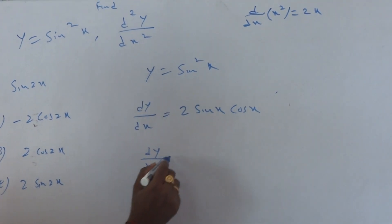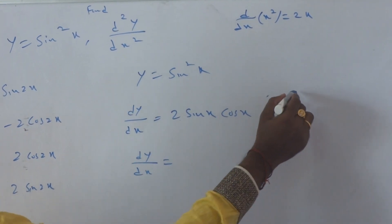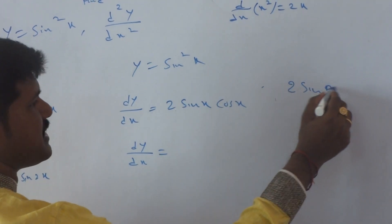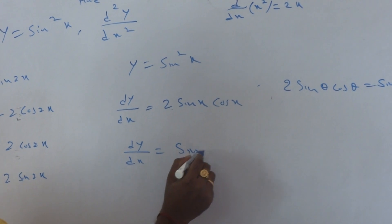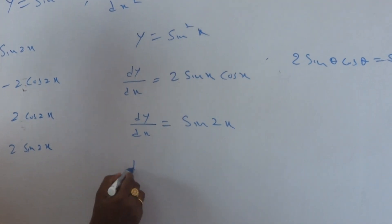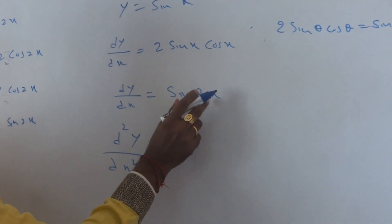So dy/dx equals 2 sin x cos x. In trigonometry, we have the formula 2 sin theta cos theta equals sin 2 theta, so this simplifies to sin 2x. Now differentiating again, d²y/dx² equals...